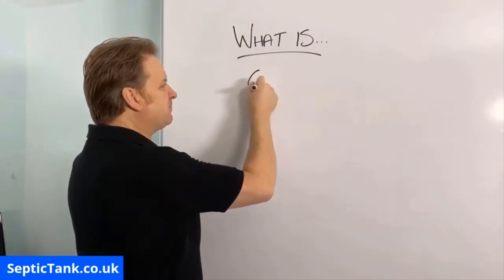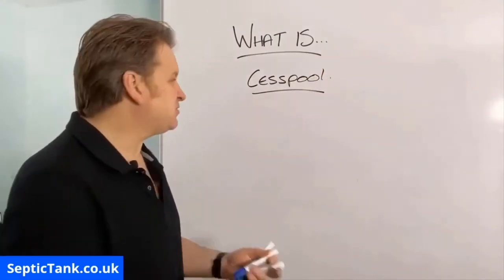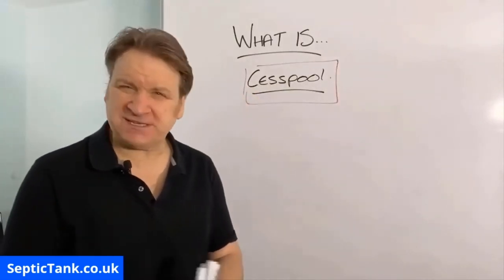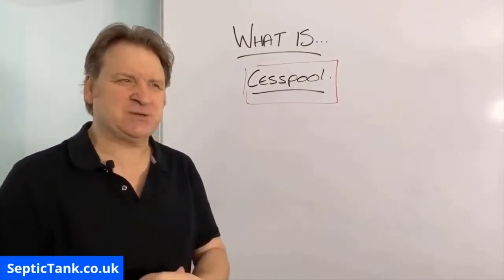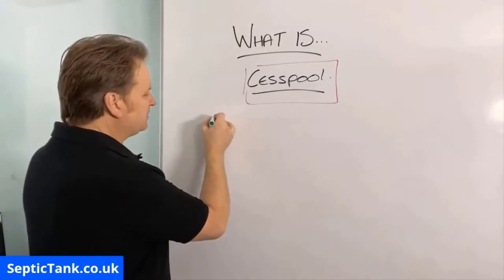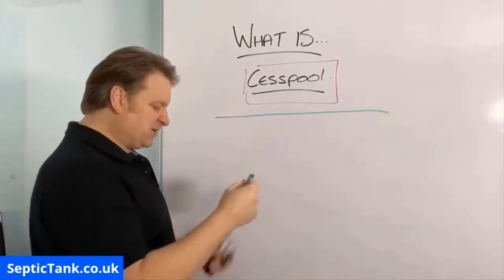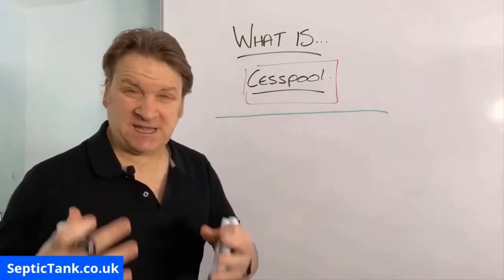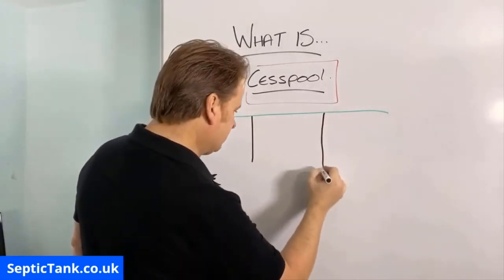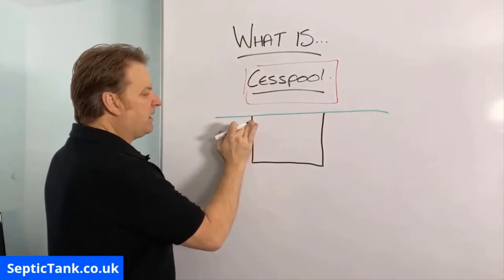So, what is a cesspool? This pertains to houses, properties, or business units that aren't connected to the main sewers. A cesspool is basically a sealed unit. If you imagine that's your grass, a cesspool is a box under the ground with an inlet — that's all it has.